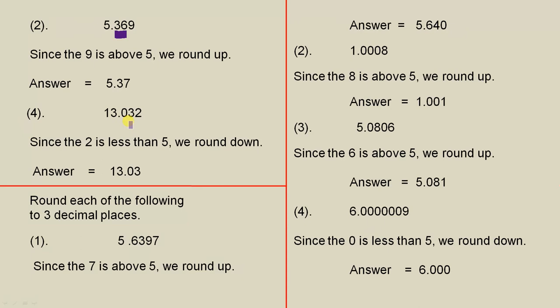Number 4. We're rounding off to two decimal places, which is there. Since the 2 is less than 5, we round down, which means we keep the 0 and the 3 the same. So that's the answer.